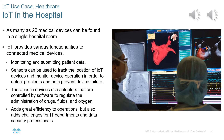In a clinical setting, as many as 20 medical devices can be found in a single hospital room. The IoT provides various functionalities to connected medical devices. Aside from monitoring and submitting patient data, IoT sensors can track the location of devices — healthcare personnel can spend up to 25% of their time searching for required medical equipment. Asset tracking through the network can greatly enhance operational efficiency, and IoT sensors also monitor device operation to detect problems and help prevent device failure.